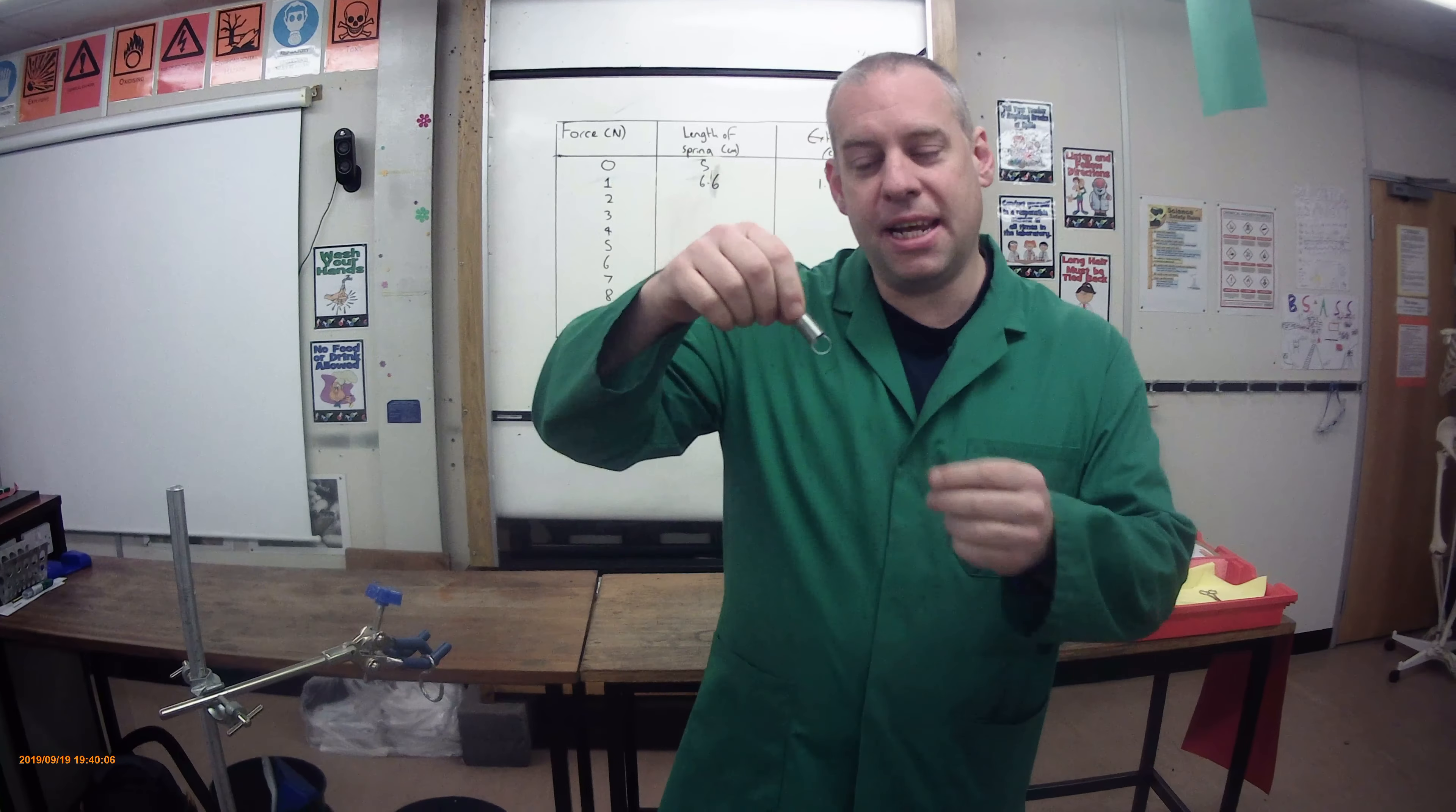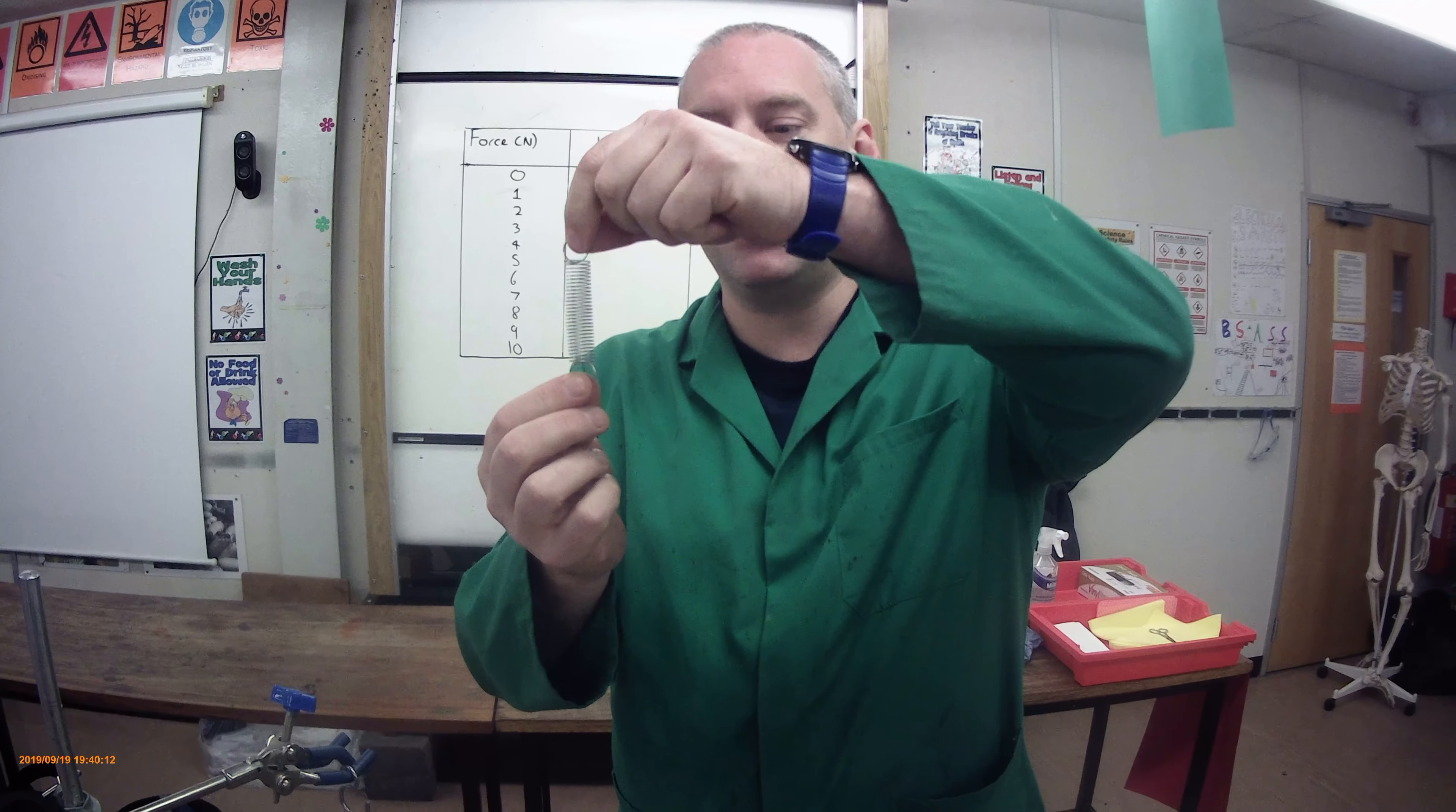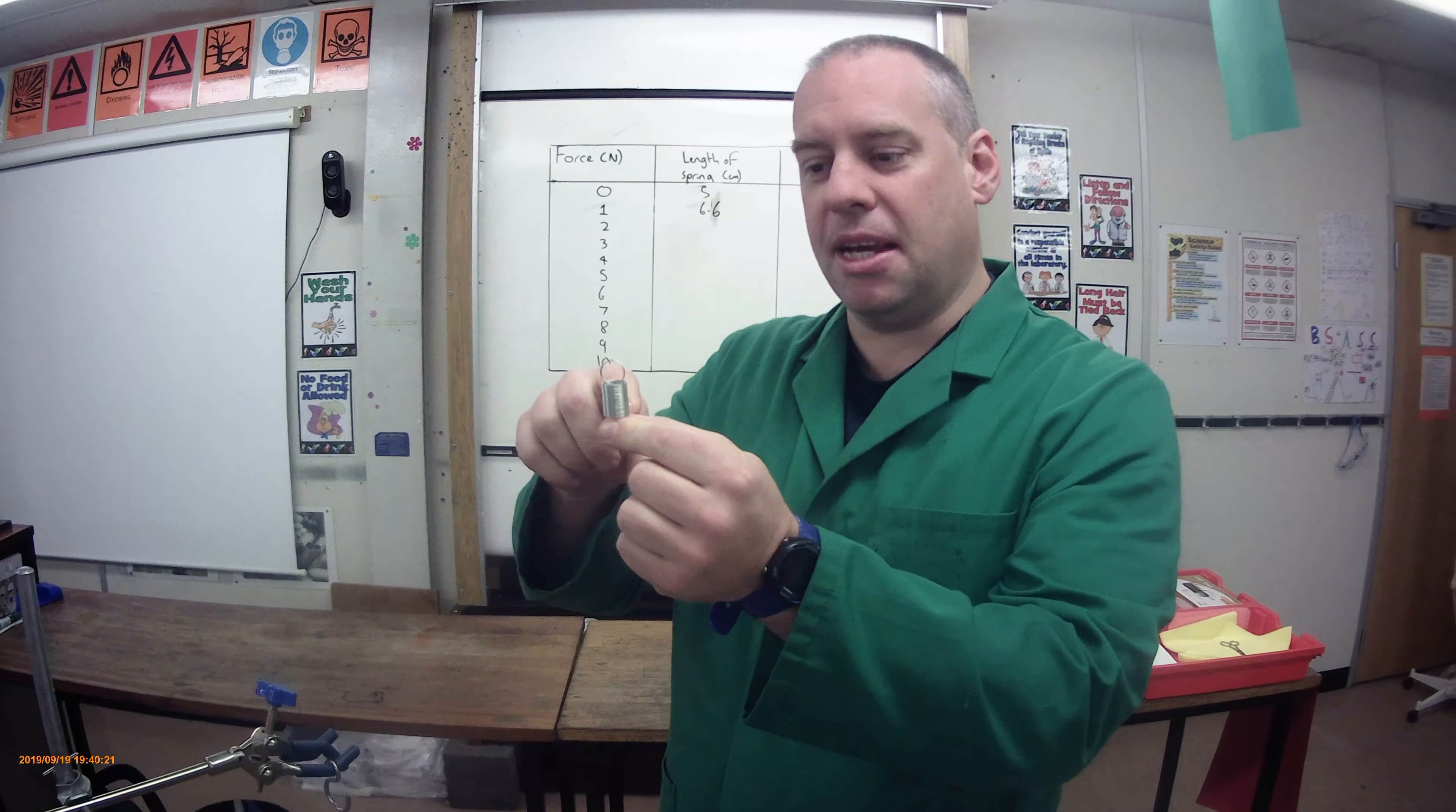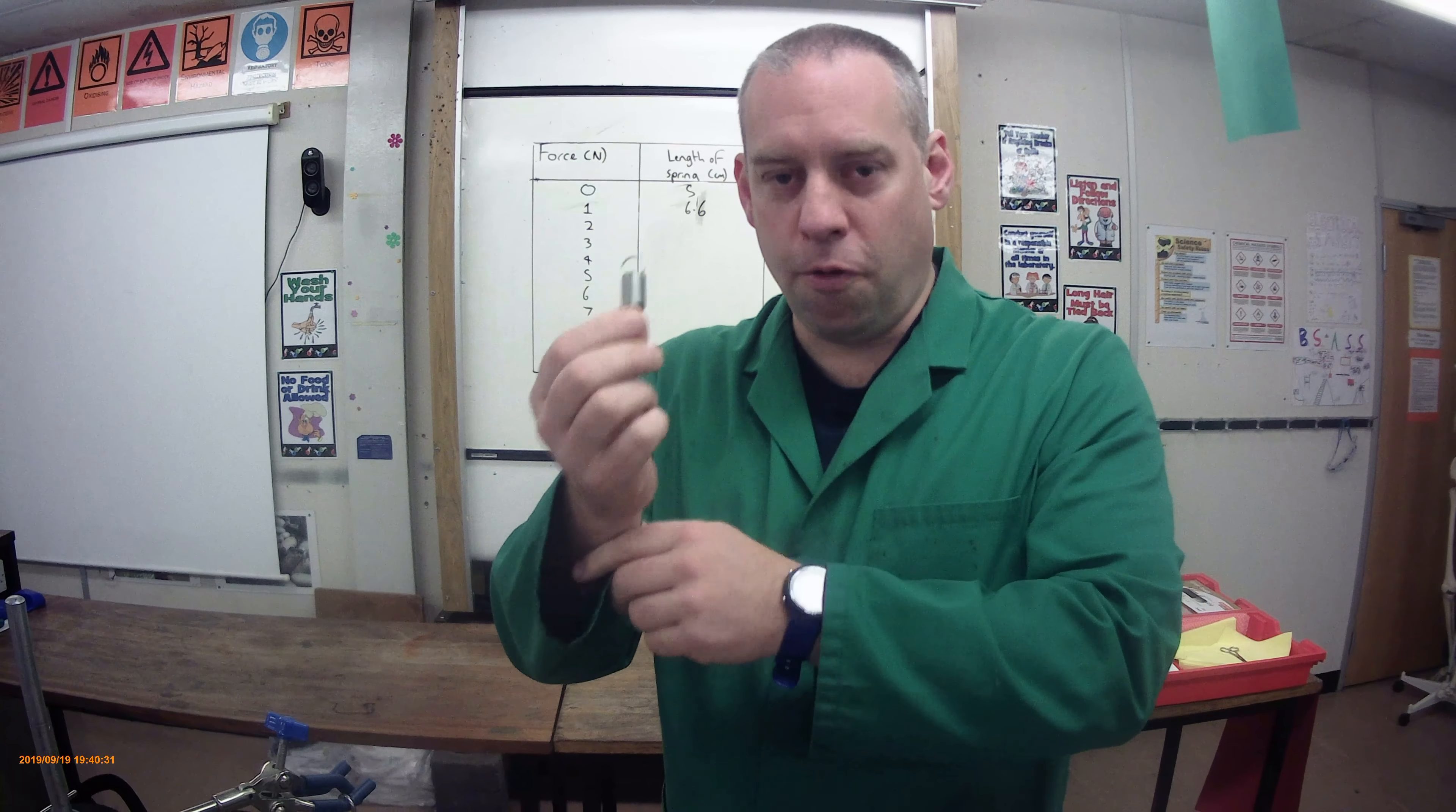Excellent. So we've seen the extension of the springs and we've seen that it's a linear relationship. So if I put forces on, it extends by the same amount each time I add a force. So I can reverse engineer that. If one newton gives me an extension of 3.2 centimeters, I know that an extension of 3.2 centimeters must be a force of one newton. So I can therefore use springs to measure forces.